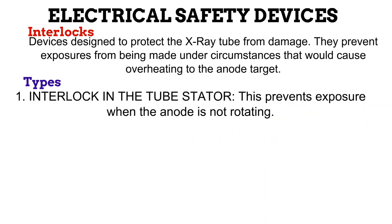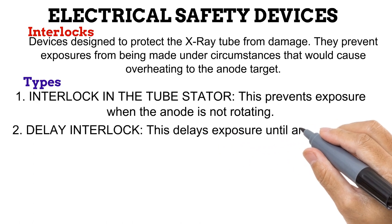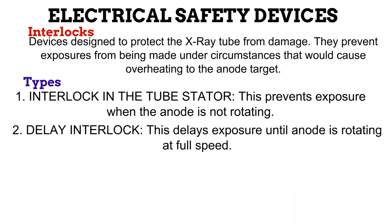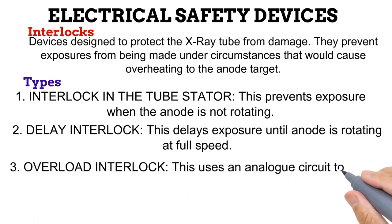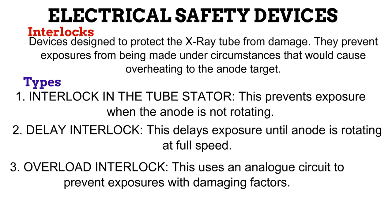The first is the interlock in the stator, which prevents exposures from being made when the anode is not rotating. The stator sets up a rotational magnetic field that causes the rotor to rotate; if there is a problem with the stator, the rotor and anode won't rotate, and creating exposures with a non-rotating anode can destroy it. The second is the delay interlock, which introduces a delay period before an exposure is made, enabling the anode to reach its full rotation speed of about 3,600 revolutions per minute before exposure. The third is the overload interlock, which uses analog circuitry to prevent exposures when two high factors such as KV or mAs are selected.